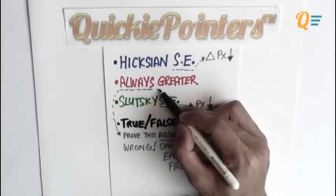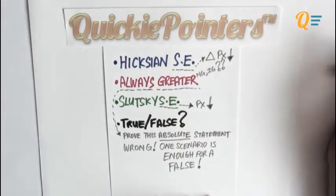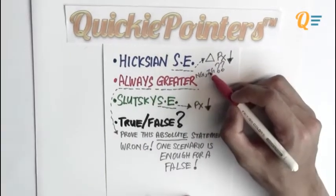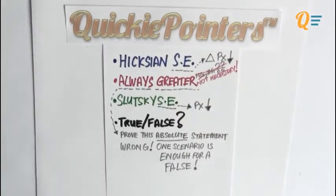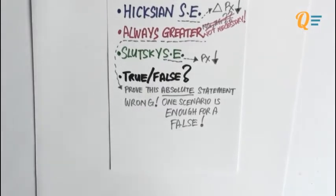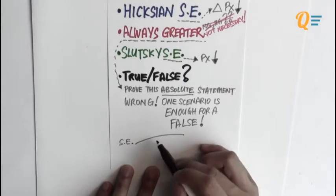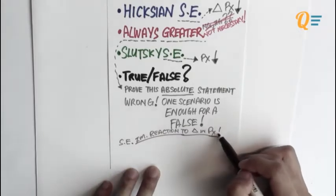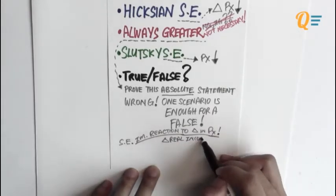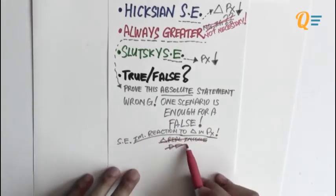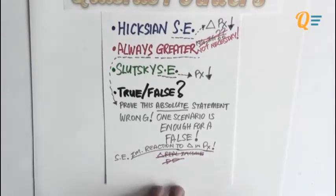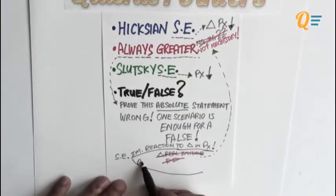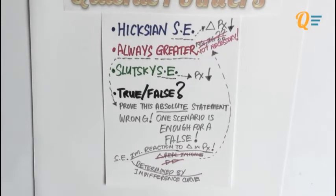I want to place emphasis on the second quickie pointer. When we're comparing substitution effects, do we have to talk about normal good, inferior good, or even Giffen good? The answer is you don't necessarily have to bring these in. Just remember, your substitution effect is your immediate reaction to a change in price. The SE is a very emotional thing — it responds to price change. It hasn't considered the change in real income or its demand for the particular good. The SE is determined by the indifference curve.